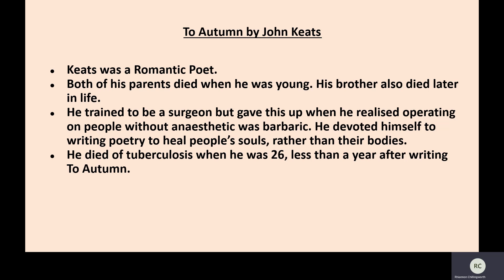To Autumn — remember this was written by John Keats, who was a Romantic poet. Both of his parents died when he was young and his brother also died of tuberculosis, which would later kill Keats as well. Keats trained to be a surgeon, but he gave this up when he realised operating on people without anaesthetic was barbaric — he thought it was torture. He devoted himself to writing poetry to heal people's souls rather than their bodies, and he died fearing he would never be remembered as one of Britain's great poets, as he wasn't well received by critics in his time. He eventually died of tuberculosis less than a year after writing To Autumn. We know that To Autumn uses the cycle of the seasons to represent the human life cycle and the passing from the prime of life into old age and then into death.